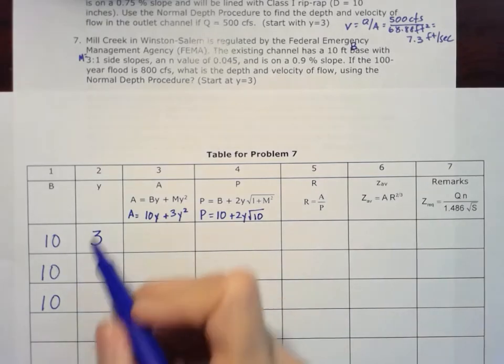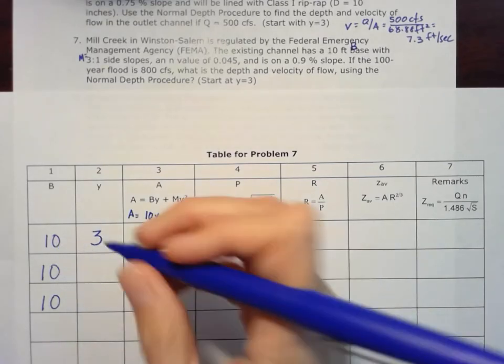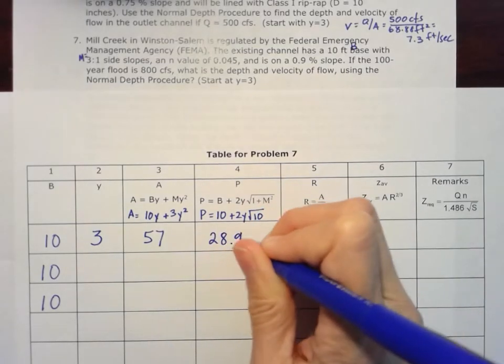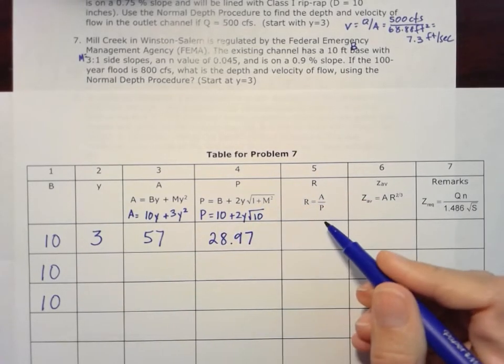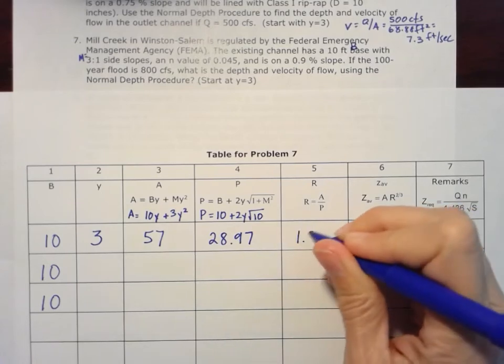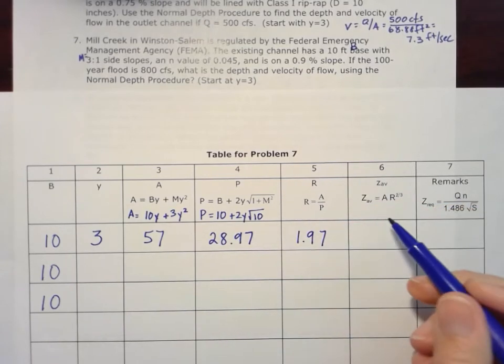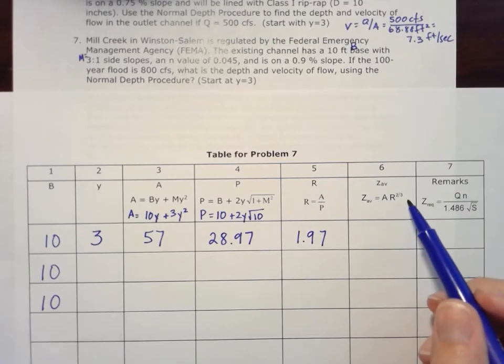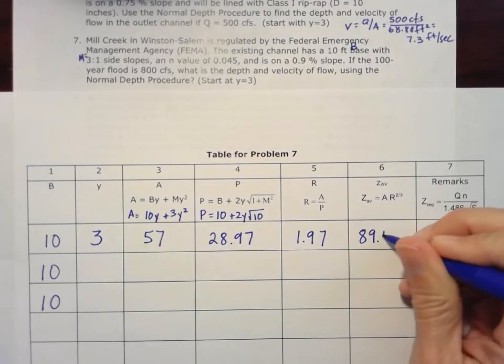So solving for Y equals 3 and B equals 10, we get an area of 57, a wetted perimeter of 28.97, which gives us a hydraulic radius of 1.97, and that Z average value, which is the area times the hydraulic radius to the 2/3, of 89.49.